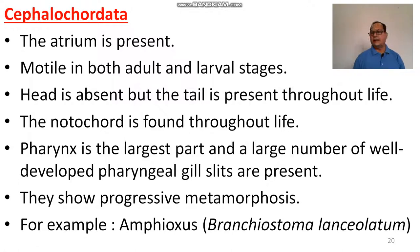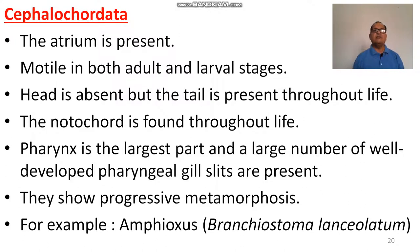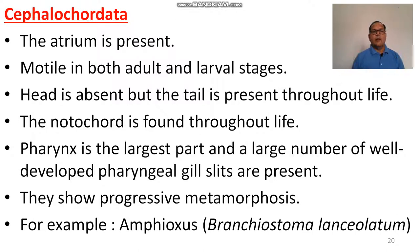Now, the second subphylum is Cephalochordata. In Cephalochordata, an atrium is present, and they are motile in both adult and larval stages. The head is absent but the tail is present throughout life. The body is divided into two parts only: the trunk and the tail. The notochord is found throughout life — not only in the larval stage but also in the adult stage. The pharynx is the largest part, with a large number of well-developed pharyngeal gill slits. They show progressive metamorphosis, not retrogressive metamorphosis like the tunicates.